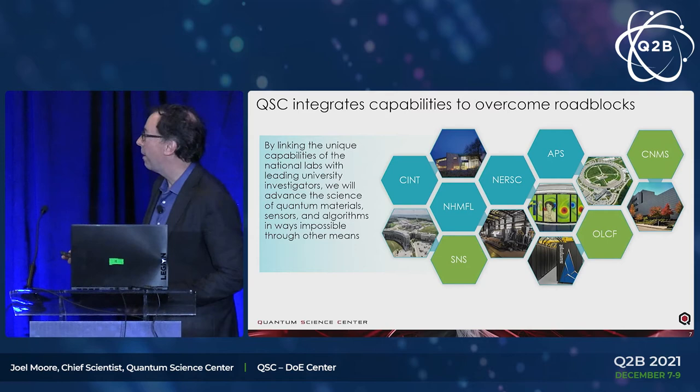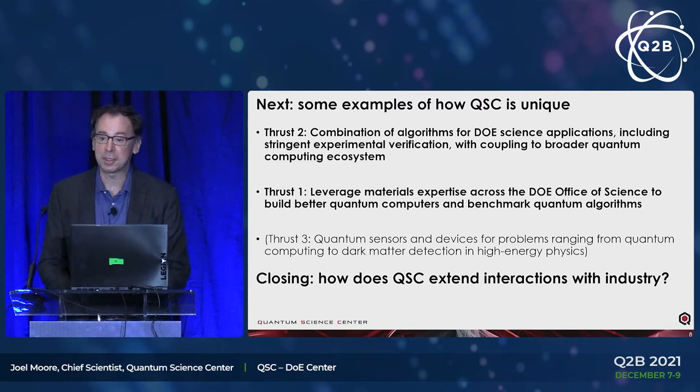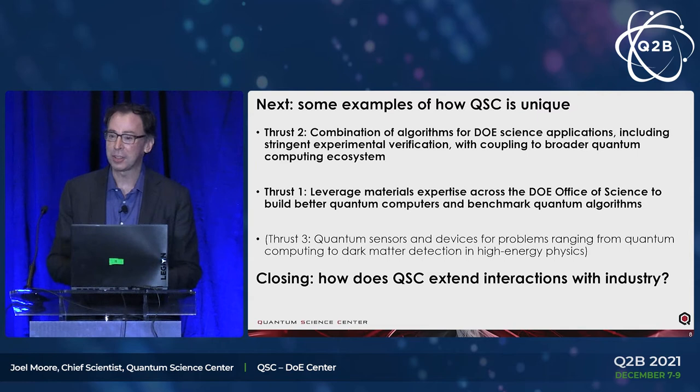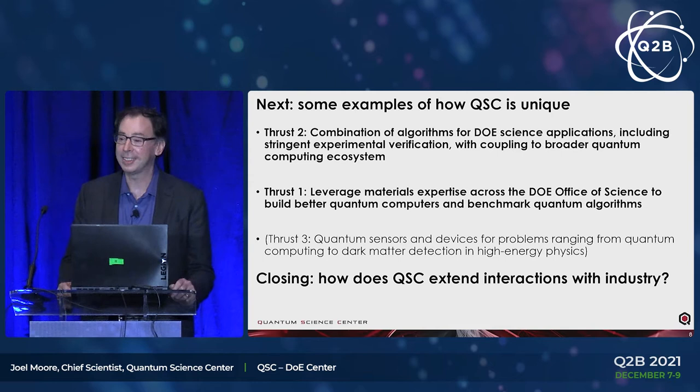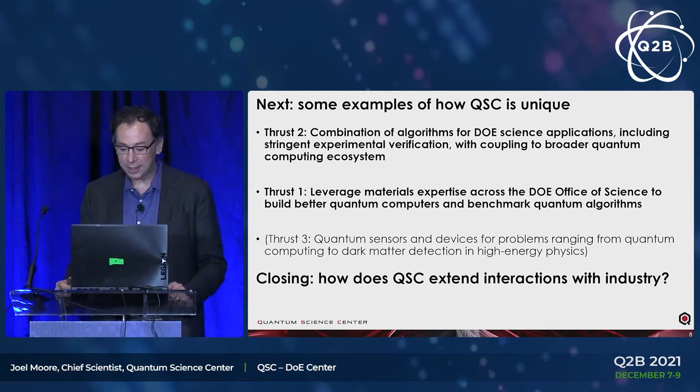I want to say a little bit about algorithms and computation, and how what we're doing may be coupled at a high level to what other places are doing in algorithms, and then how we're using the quantum computers we have now. At the same time as we're trying to advance making quantum computers, we're also very interested in the so-called NISQ machines, and while running on those machines we're interested in advancing the development of numerical software, compilers, and things like that more generally.